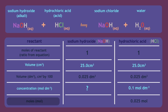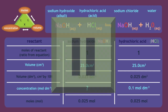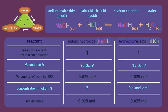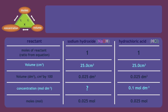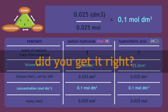The number of moles of sodium hydroxide is also 0.025 moles. Using the formula triangle, you can now find the concentration of sodium hydroxide, marked with a question mark. The correct approach is to divide the number of moles by the volume in dm³, giving an unknown concentration of sodium hydroxide of 0.1 moles per dm³.